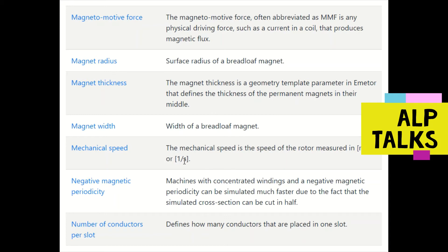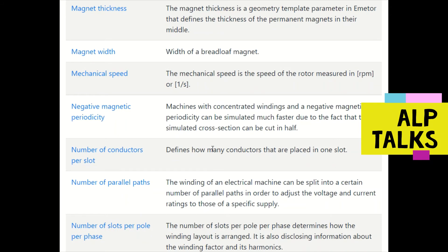Mechanical speed is the speed of the rotor — it can be expressed in revolutions per minute (RPM) or revolutions per second (RPS). Negative magnetic periodicity: machines with concentrated windings and a negative magnetic periodicity can be simulated faster by cutting off the negative portions.